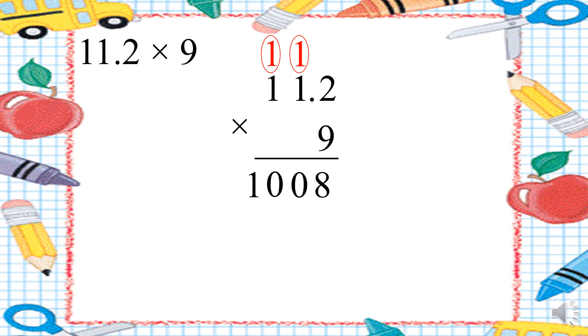But wait, where's the point? I will count. How many digits after the point do you have up? We have one digit after the point here. Then we have to count from the right side one digit. Then I will put the point. I get 100.8.